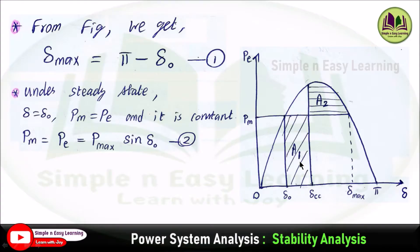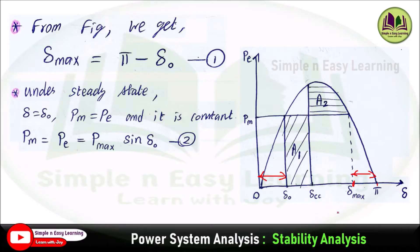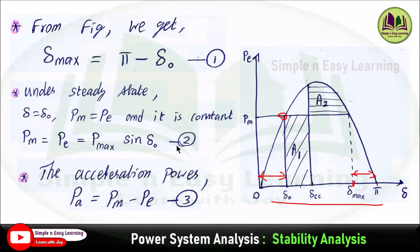From the diagram, we find del_max. Considering the total length from 0 to pi, the region from del_max to pi equals the region from 0 to del_naught. Therefore, del_max equals pi minus del_naught — this is the first equation. Under steady state, del equals del_naught and electrical power equals mechanical power: P_m = P_e = P_max × sin(del_naught) — this is the second equation.